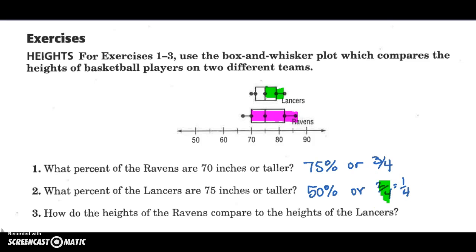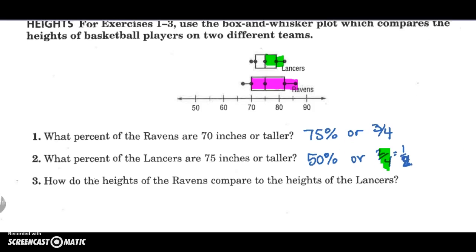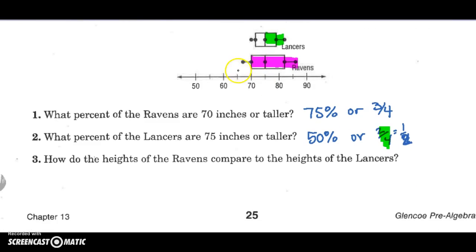My bad. Change that 50%, 1-half. And then it says to talk about comparing the two. Well, look, the Ravens are more spread out. So that's one thing you could mention. And next, I kind of made a mess as I was thinking this through myself.